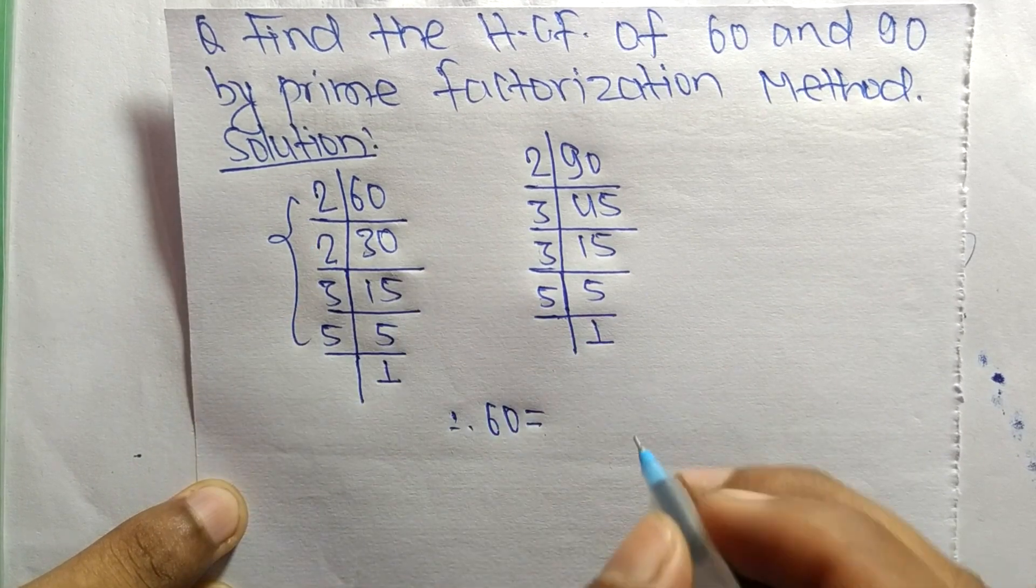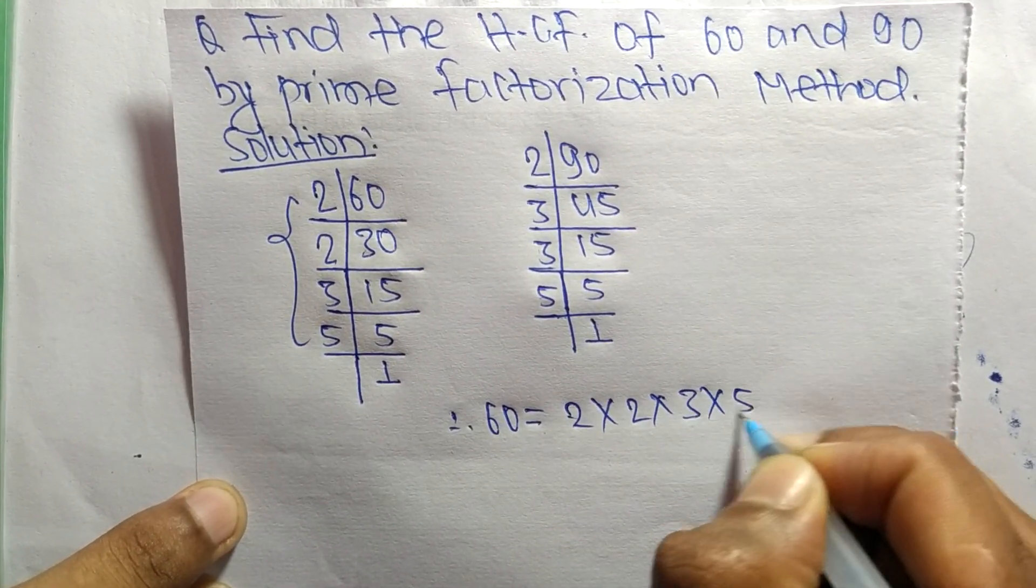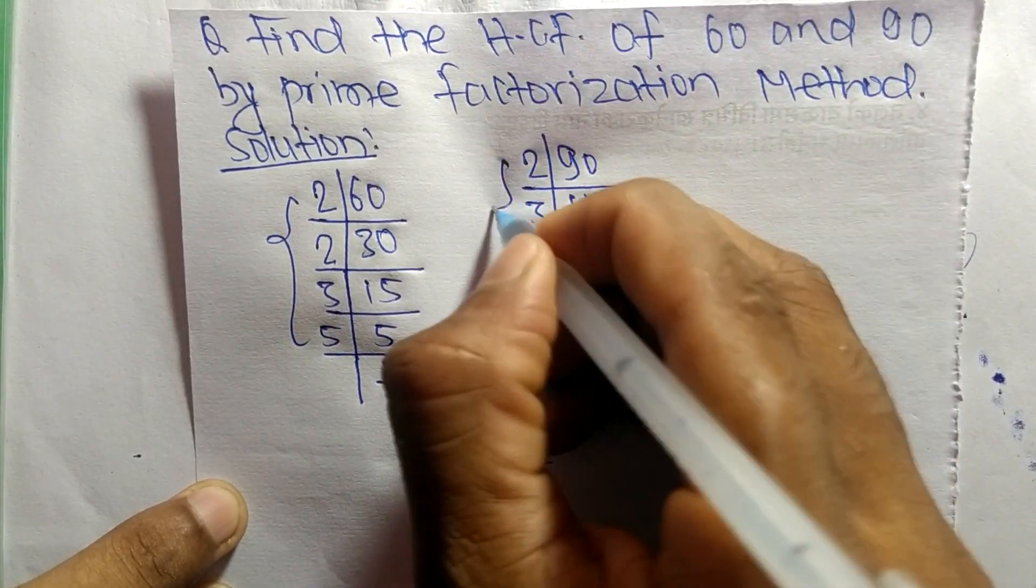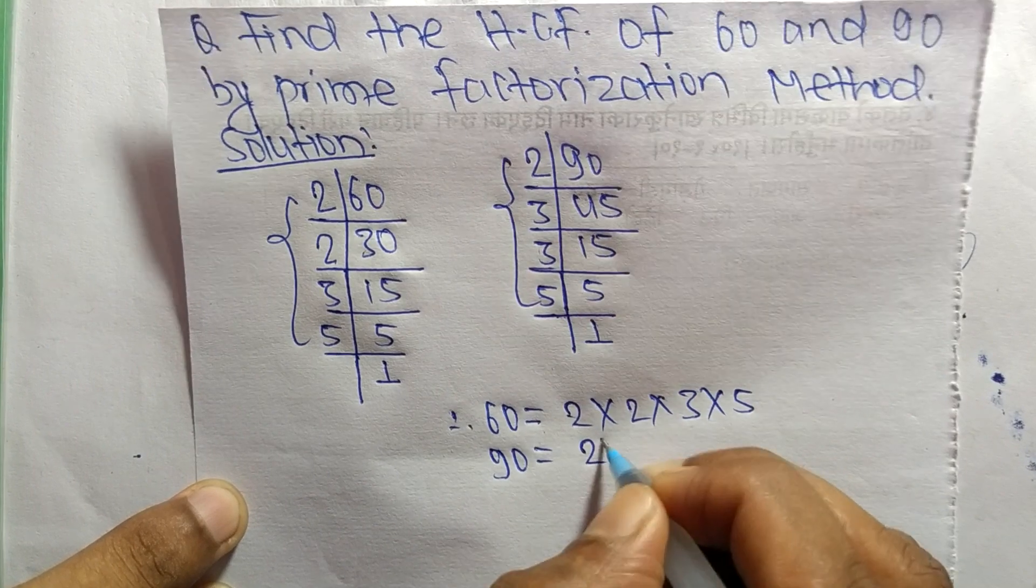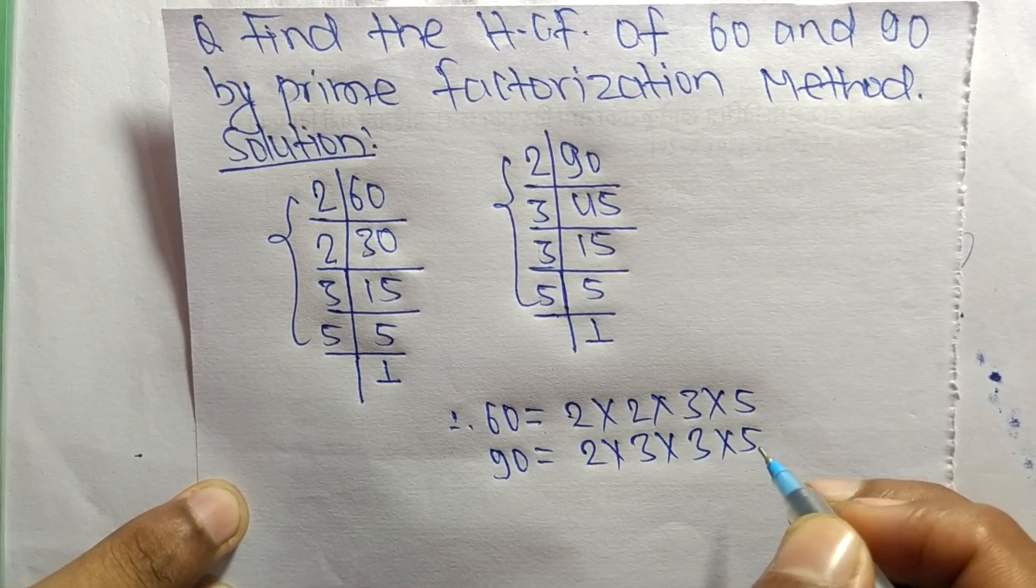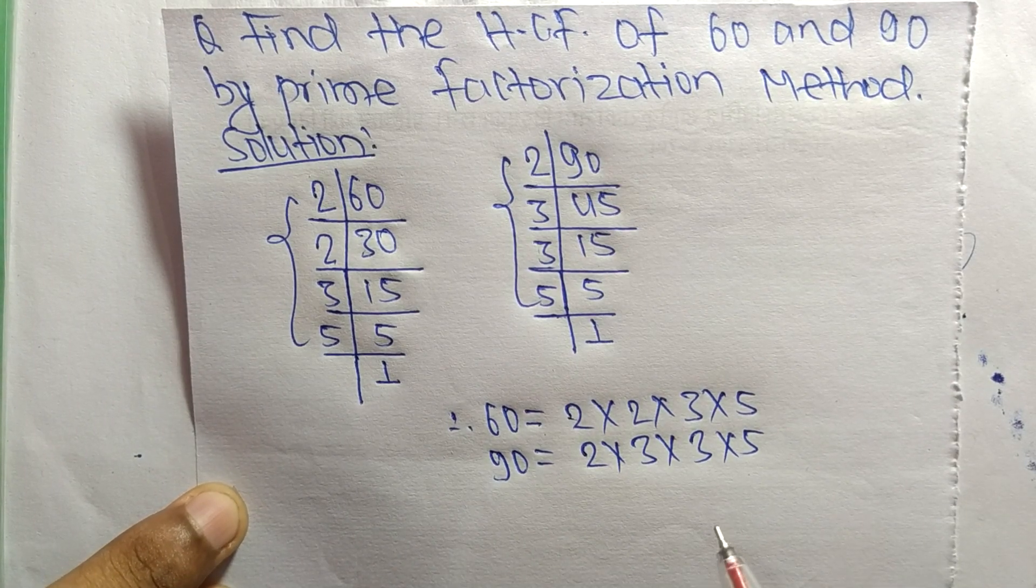From this part it is 2 times 2 times 3 times 5. Like as 90 is equal to, from this part, 2 times 3 times 3 times 5. So now from these prime factors we select the common factors.